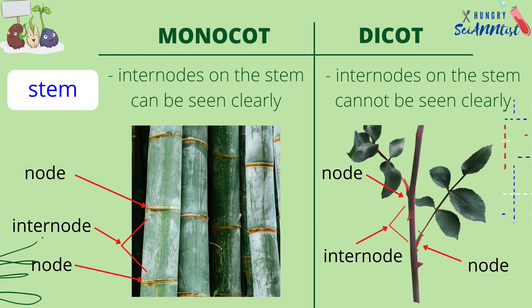Monocot stem has internodes that can be seen clearly, while dicot stem has internodes that cannot be seen clearly.